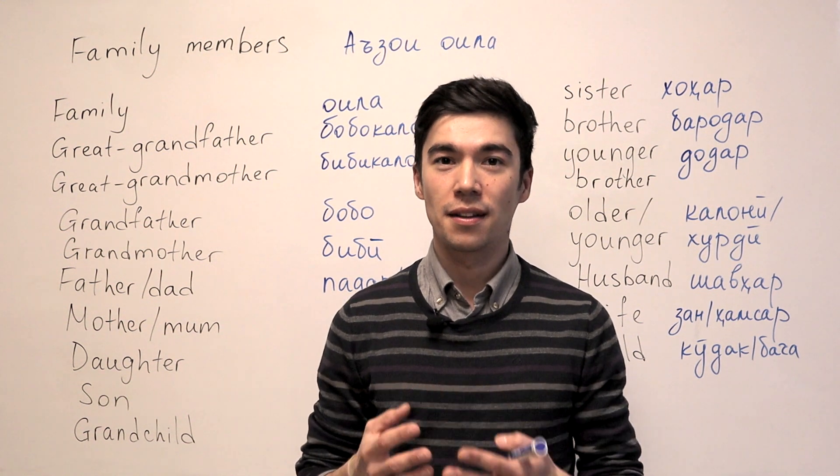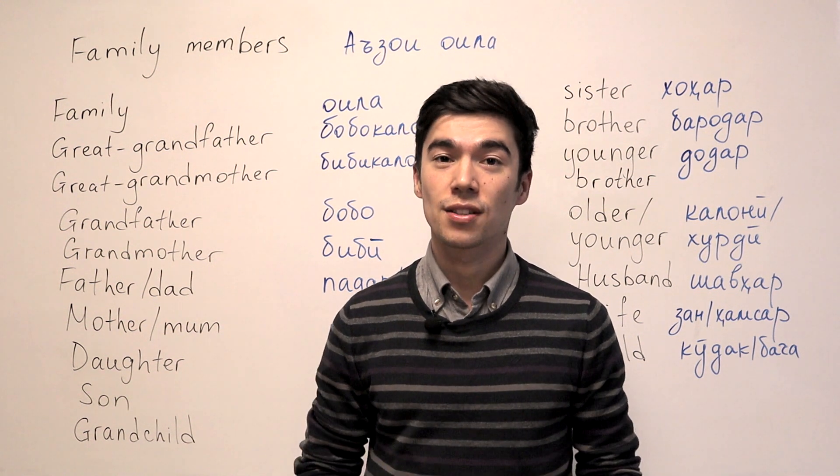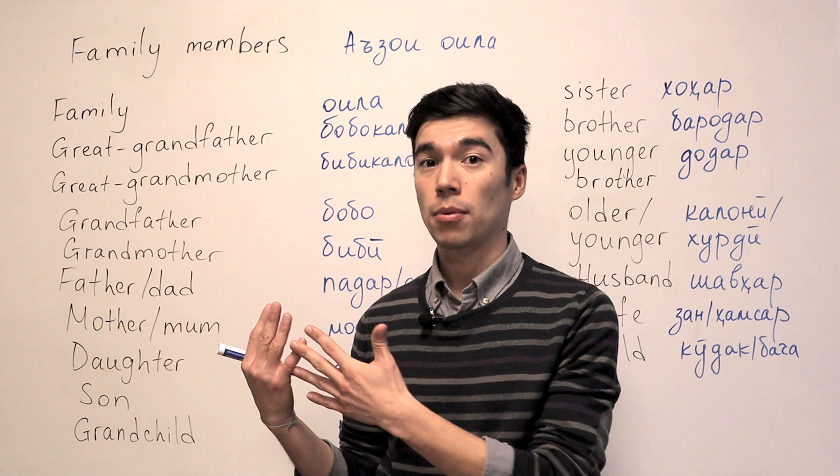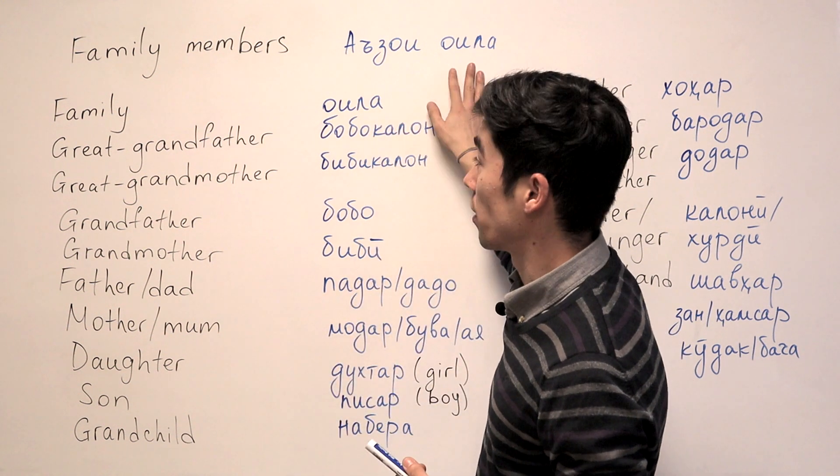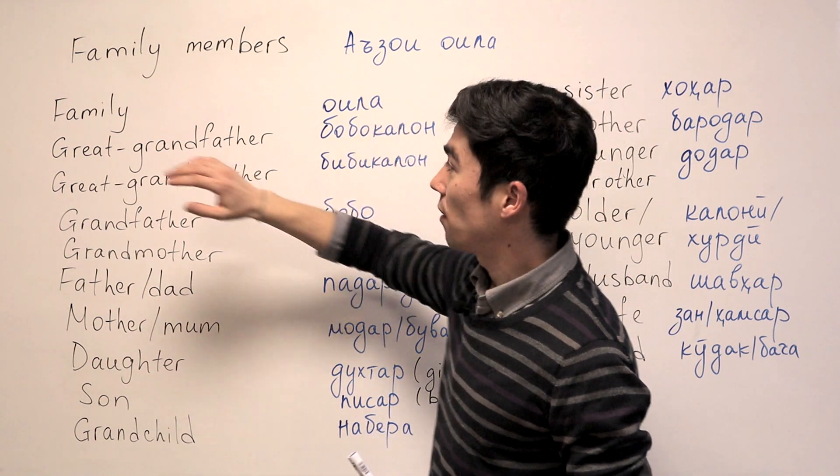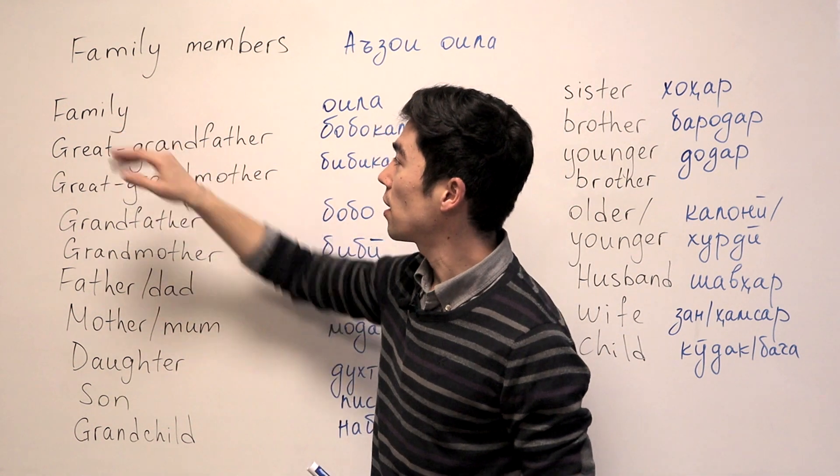Hi there, friends. My name is Hussain and in this channel we teach Tajik. So today we'll talk about the family members, or in Tajik we say Azoy Oyla. Oyla means family.